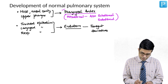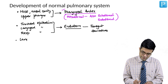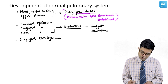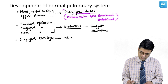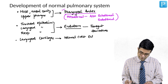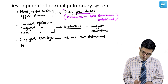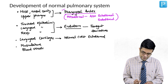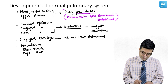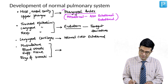The laryngeal cartilages are neuroectodermal or neural crest ectodermal derivatives. And finally, the entire musculature, the entire blood vessels, the supporting tissue, connective tissue, as well as the rings of the bronchi — they are all mesodermal in origin.